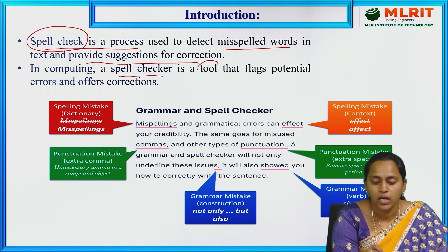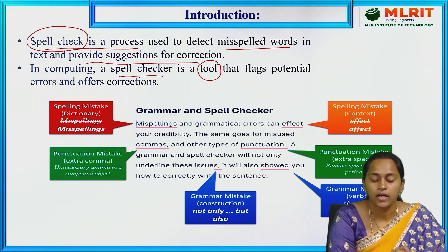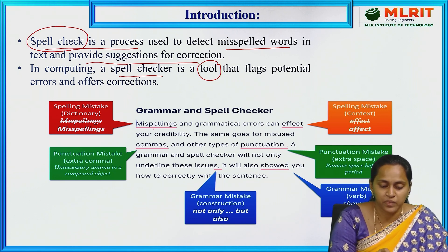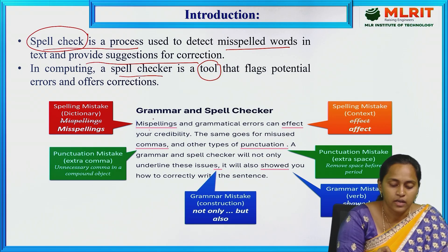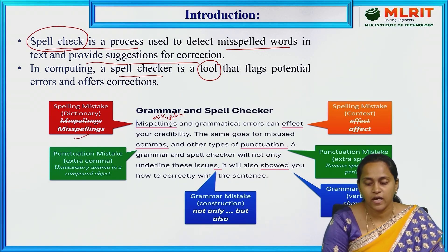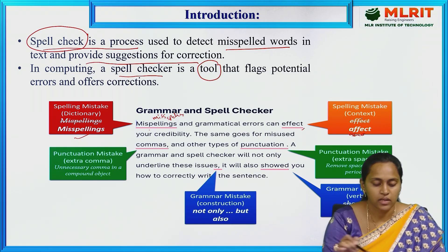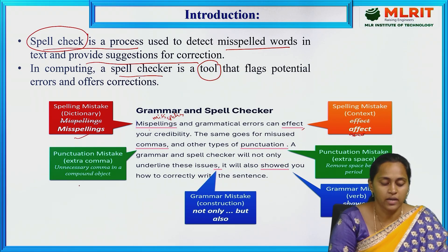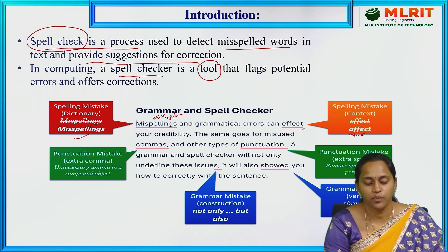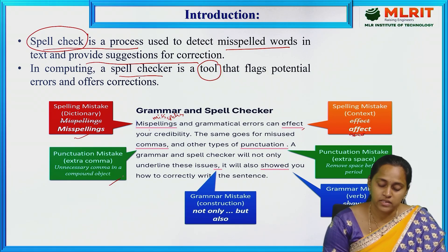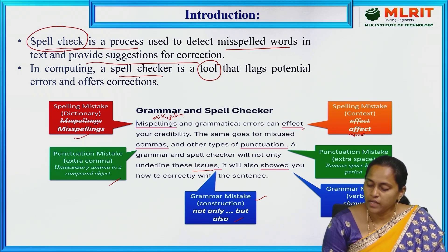Let's see a paragraph where the grammar and spell checker highlights some misspellings. For example, the actual word is 'misspellings' — it suggests the spelling mistake. Another type of spelling mistake: 'effect' spelled as 'a-f-f-e-c-t'. Next, punctuation mistakes, extra unnecessary compound object combinations — these are all different types of errors when typing a document.